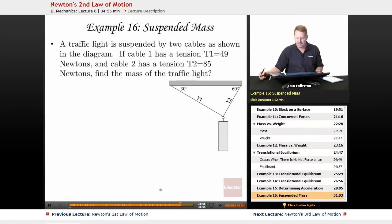Let's talk about a suspended mass. In this case, we've got a traffic light suspended by two cables as shown, and we'll label them T1 and T2. We've measured the tension in the cables using a spring scale, and we've found that T1 is 49 newtons and T2 is 85 newtons.